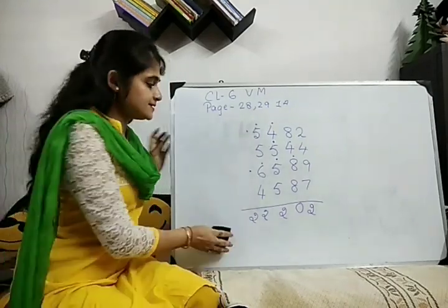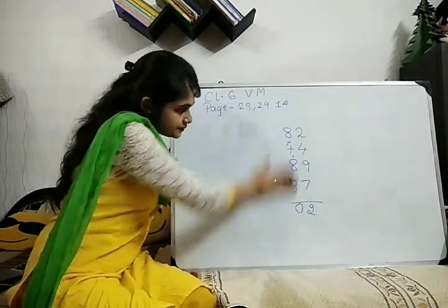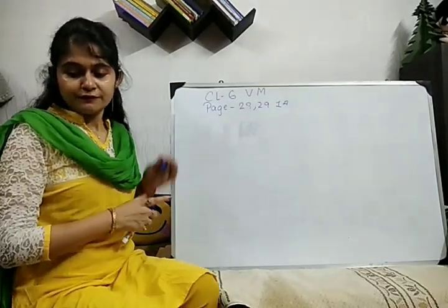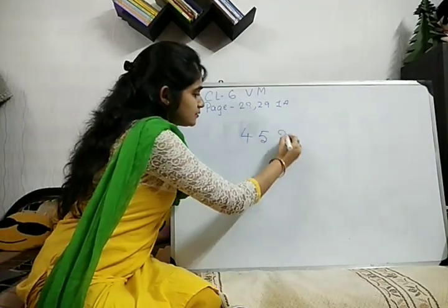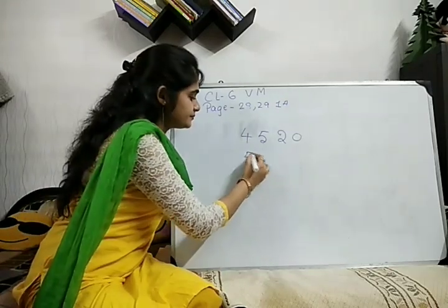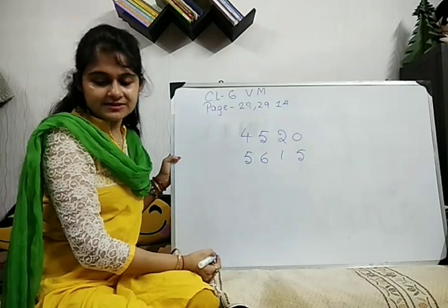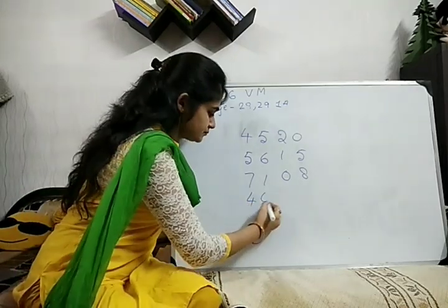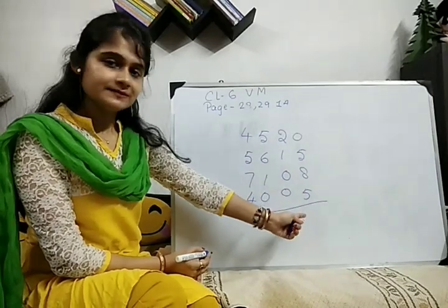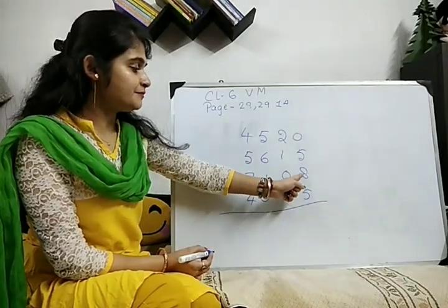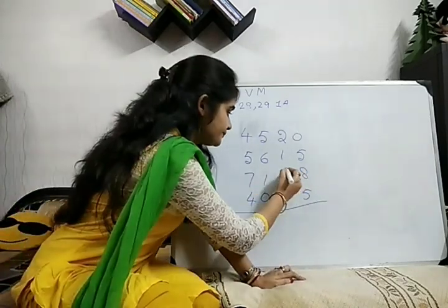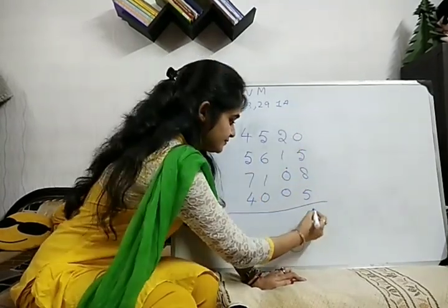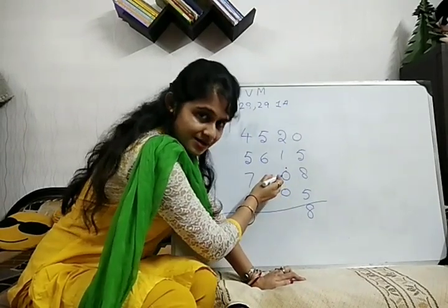Now we come to next page, 29. Is this clear? Come to the next page now. From that page also I will show you 2 sums. We will do question number 4: 4, 5, 2, 0 — then 5, 6, 1, 5 — then 7, 1, 0, 8 — then 4, 4, 0, 5. So we will start from the right side. 5 plus 8, then 5 plus 5 is 10, 11, 12, 13 — drop 10, 3 will move. 3 plus 5 is 8, total 8 will move. 8 plus 0 is 8, put 8 here. Done. 0 plus 0 plus 1 is 1.